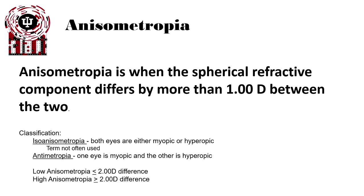Anisometropia is when the spherical refractive components differ by more than one diopter between the two eyes. There are a number of different classification systems. They could be classified as iso-anisometropic, where both eyes are either myopic or hyperopic, though this term is not often used.